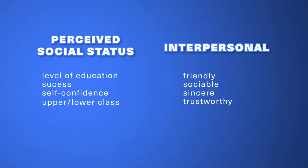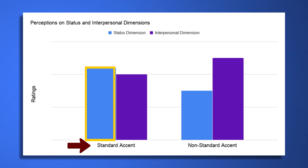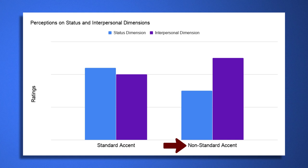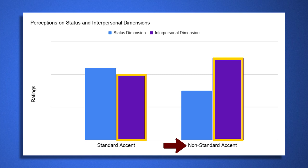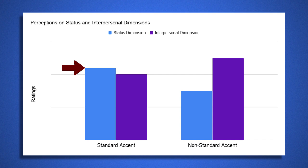Based on the speaker's accent alone, we perceive standard speakers higher on the social status dimension than non-standard speakers. However, a non-standard accent triggers more positive perceptions on the interpersonal dimension. That's why someone using a standard accent is generally perceived as more educated, more successful, self-confident, and more likely to be upper class. But the speaker using a non-standard accent is perceived as more friendly, sociable, sincere, and trustworthy.